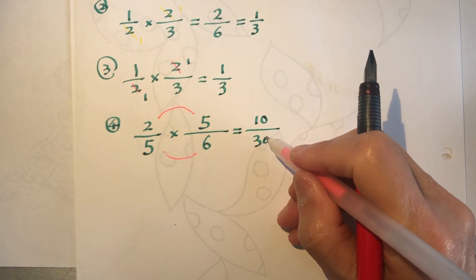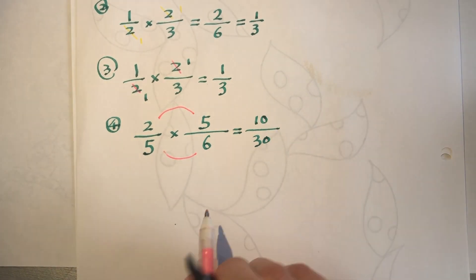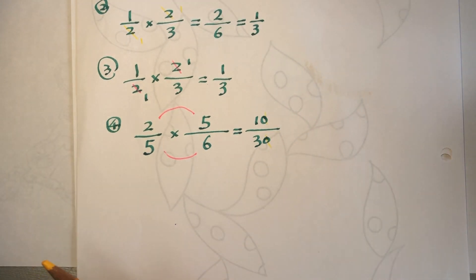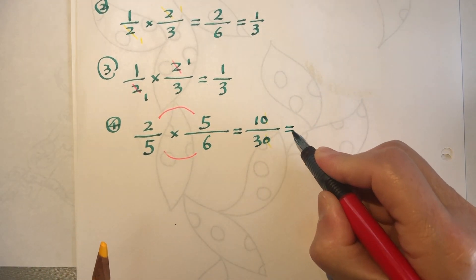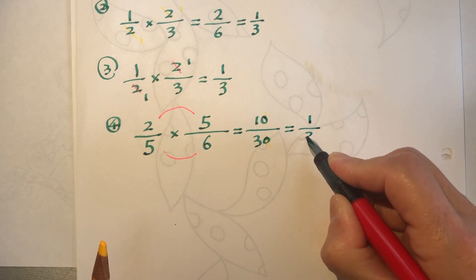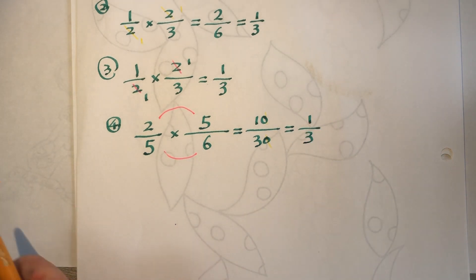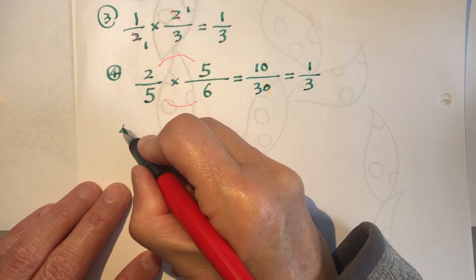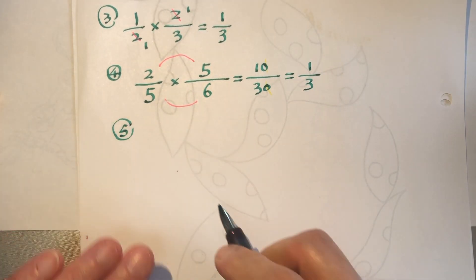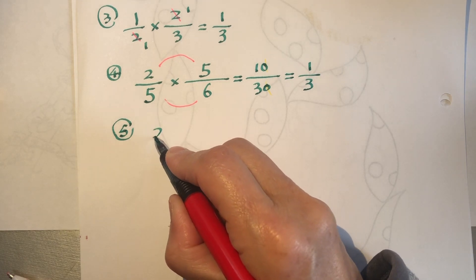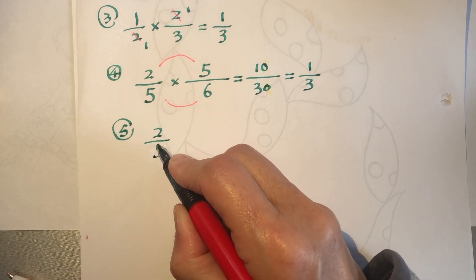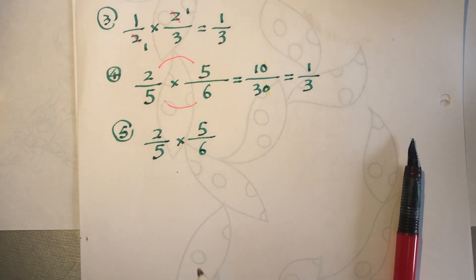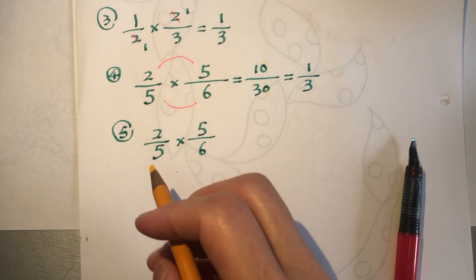Now we simplify. Both have a 0, cross-cancel this 0, which means shrink 10 times, 1 over 3. Okay, question number 4, we will do it in... becomes question number 5. We will do exactly the same problem, but we use our simplified method from the beginning.